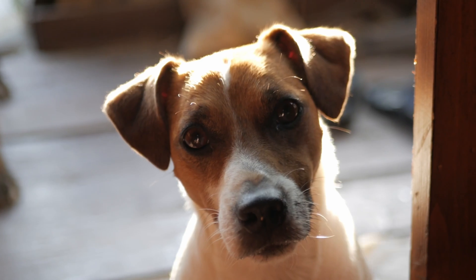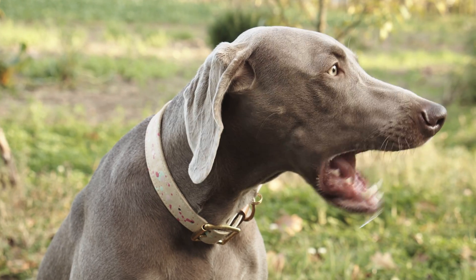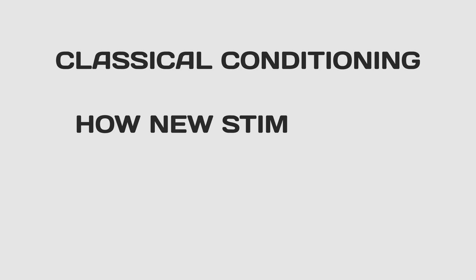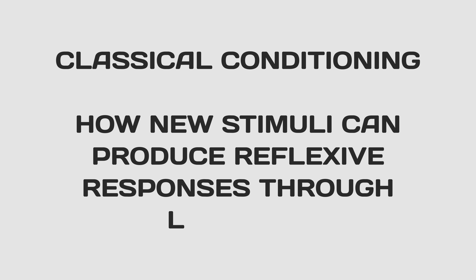Classical conditioning, pioneered by Russian physiologist Ivan Pavlov in the late 19th century, transformed our understanding of how animals, dogs included, learn and respond to stimuli. His groundbreaking experiments focused on measuring various factors, including salivation in response to food. In the early 1900s, Pavlov made a crucial observation: one of his dogs started salivating before the food was even presented. This observation laid the foundation for classical conditioning, which explores how new stimuli can produce reflexive responses through learning.